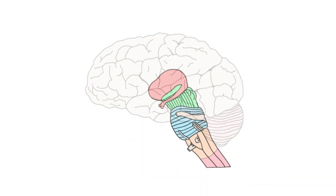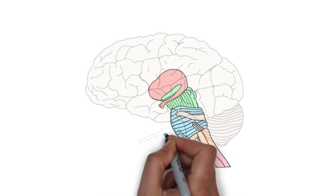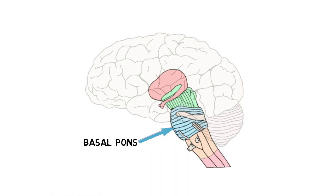Pons is Latin for bridge, and it was so named because the anterior part of the pons, which is known as the basal or basilar pons, causes the pons to look like a bridge that connects the two hemispheres of the cerebellum.